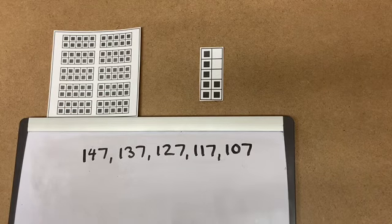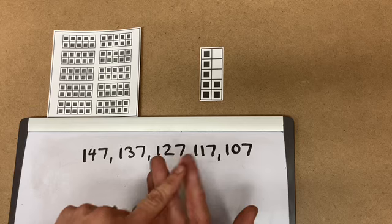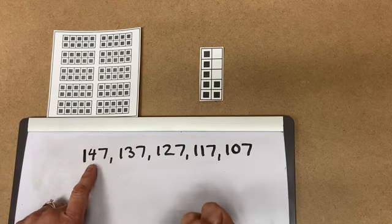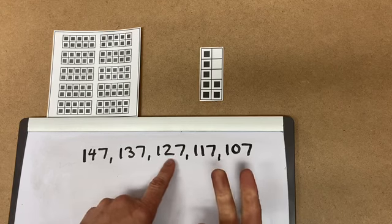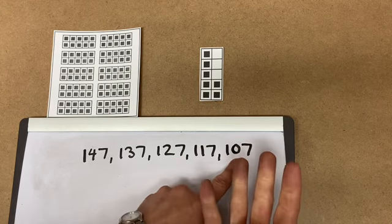If we're going to do it with our fingers, we imagine that each finger is 10. So we put 147 into our hand, and we count back by 10. 137, 127, 117, 107.